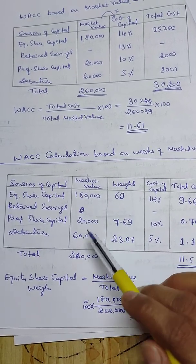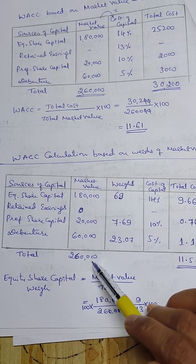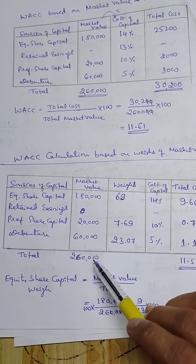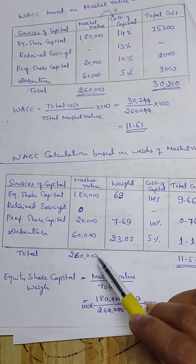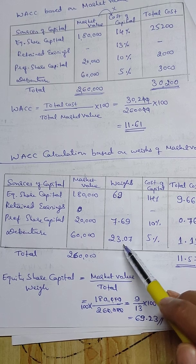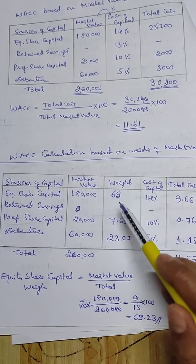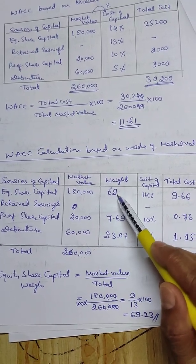For market value proportions: 20,000 divided by 2,60,000 into 100 gives 7.69%. 60,000 divided by 2,60,000 into 100 gives 23.07%. So we get 23.07%, 7.69%, and 69% as the proportions.